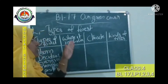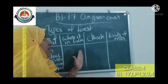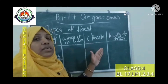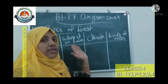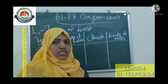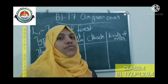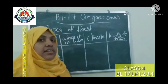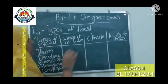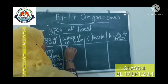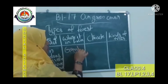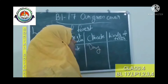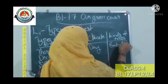Now we have to fill in three columns: where it is found in India, what type of climate is found in that forest, and what kinds of trees are found there. We have already read the textbook, so we can fill this in. Thorn forest — where in India? Gujarat and Rajasthan. Climate? Dry climate. Kinds of trees? Babul.